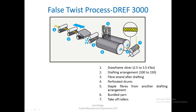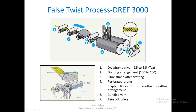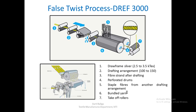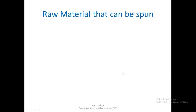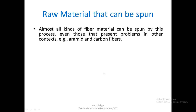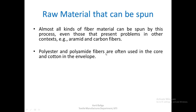The output is a bundled yarn, which is then taken up and wound onto a suitable package. The machine is very gentle in its operation, so all kinds of fibres can be spun — even those difficult to spin on other spinning systems including ring frames. Fibres like aramid and carbon fibres can be spun on DREF 3.